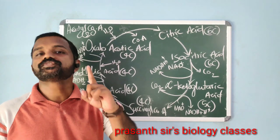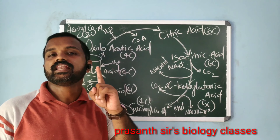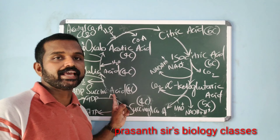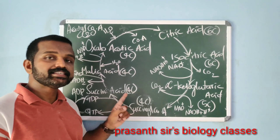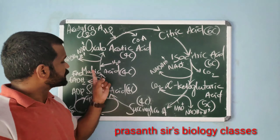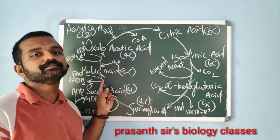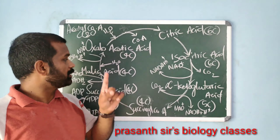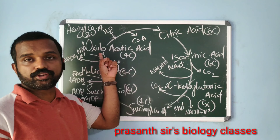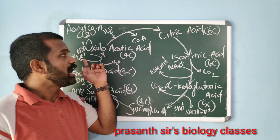The only step in the Krebs cycle in which substrate-level phosphorylation occurs is during the conversion of succinyl coenzyme A into succinic acid. The next step: succinic acid is converted into malic acid, a four-carbon compound. During this conversion, oxidation occurs — the hydrogen acceptor is FAD and it forms FADH₂. The next step: malic acid is converted into oxaloacetic acid — oxidation occurs, hydrogen acceptor is NAD⁺, and it forms NADH + H⁺.